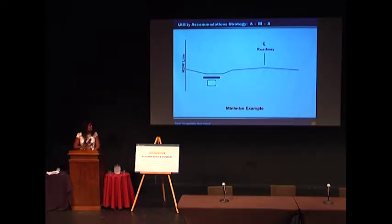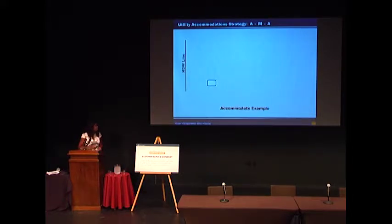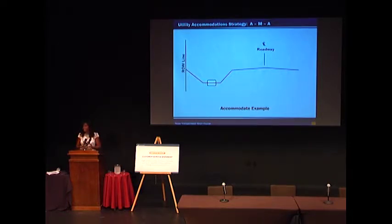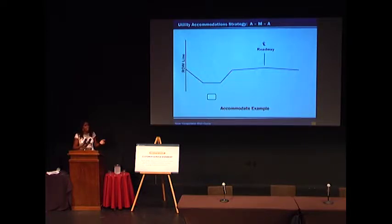Now say we go through these two scenarios and neither one are feasible for whatever reason. We have the same utility facility and the proposed roadway ditch grade, and we can't redesign to minimize or avoid the impact altogether. Then we go ahead and accommodate that utility — in this case, we've lowered that line.